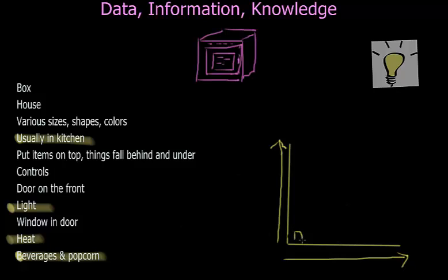We have data down here, which requires no understanding and is not connected to anything. We have information which has a little understanding and connectedness. And what we understand between data and information are the relationships. What we understand between information and knowledge are patterns.